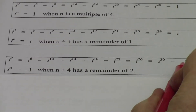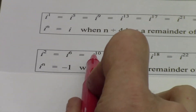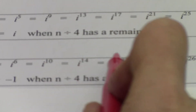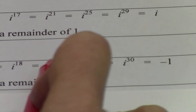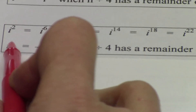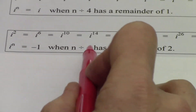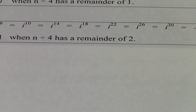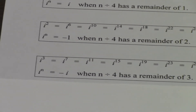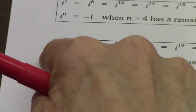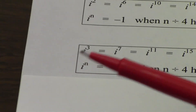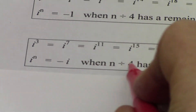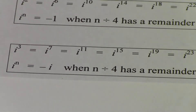i squared equals negative one, and it repeated every four powers — at i to the sixth, i to the tenth, i to the fourteenth, and so on. So i to any power equals negative one if you divide by four and have a remainder of two. And for the final case: i to the third power equals negative i, and that recycled at i to the seventh, eleventh, fifteenth, and so on. So i to any whole-number power equals negative i if the exponent divided by four has a remainder of three.